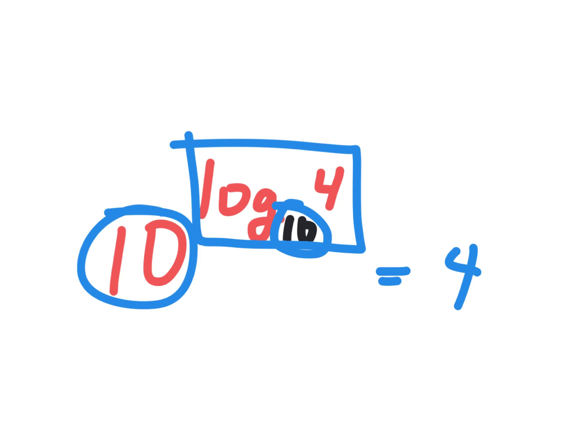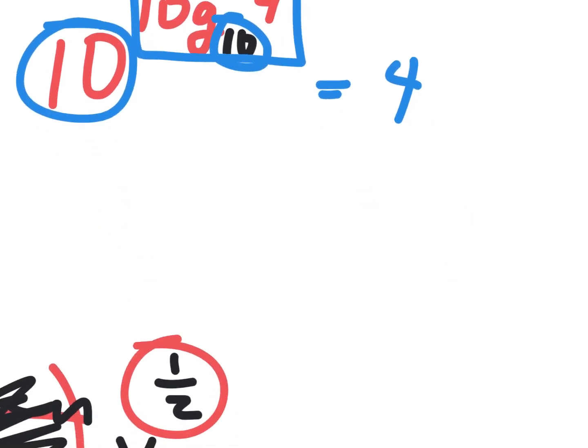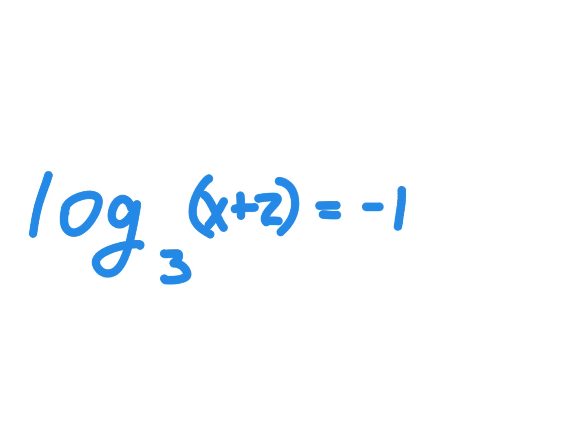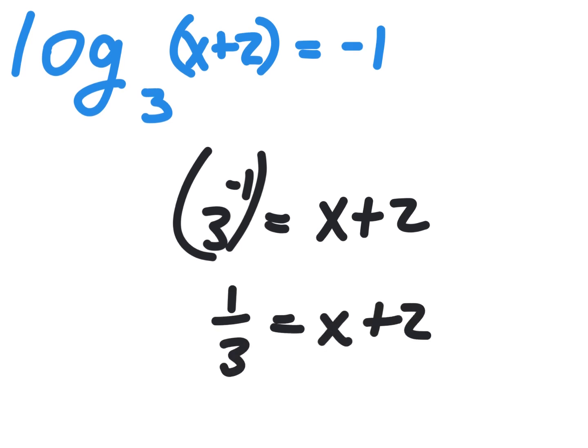Next thing, rewrites, they're huge. If I say log base three of X plus two in a parenthesis, that forces that to be the argument of that log, is equal to negative one. You should be able to solve this thing because you know how to rewrite it. When you pull off the rewrite, the log gets out of the question. It won't say log anymore. Rewrites are huge. How do you do a rewrite on this thing? It's three to the negative one equals X plus two. And that's one third.